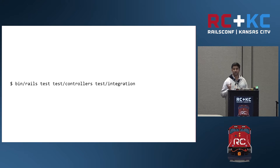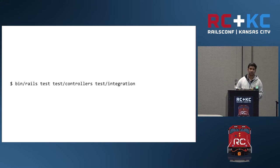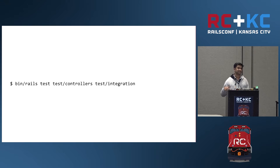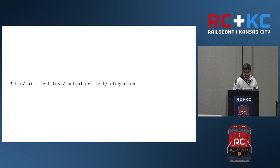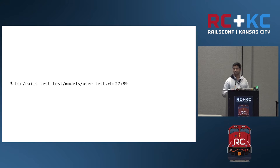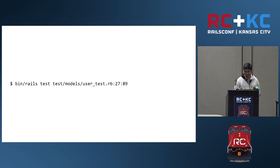It will properly run the test from line number 27 from a user test and 42 from a post test. You can also run tests from particular folders — pass `test/controllers` and `test/integration`, and it will run all the tests from those two folders. There's no need to augment rake with new rake tasks for specific folders. You can also run two tests at a time by passing the line numbers separated with a colon.